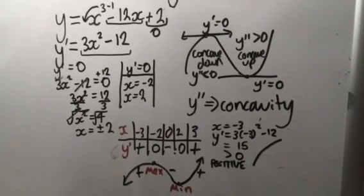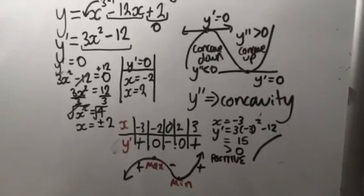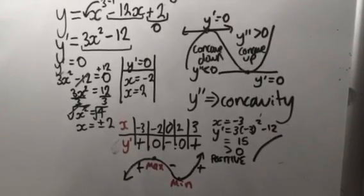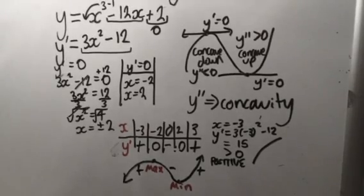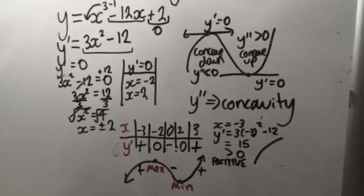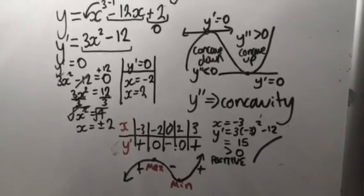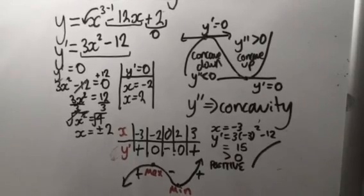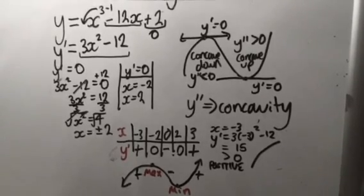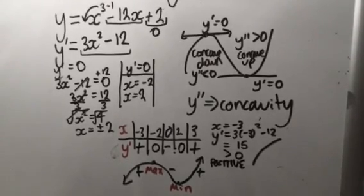By creating a table of values with points on either side and in between turning points — if you have three turning points, you'll need seven values in that table — you can see what's happening on either side of the turning points and draw a little diagram to determine whether you have a maximum or minimum turning point. That is the second way to work out what type of turning point a point is, if you don't want to or can't use the second derivative, which is all about concavity. So now you have two ways to figure out whether a turning point is a maximum or minimum. Hope that helps guys — subscribe and share!